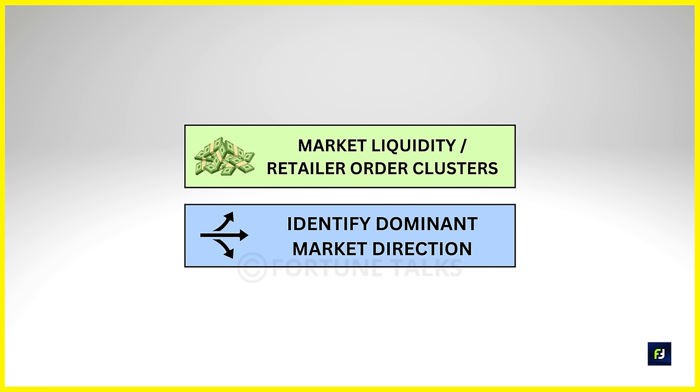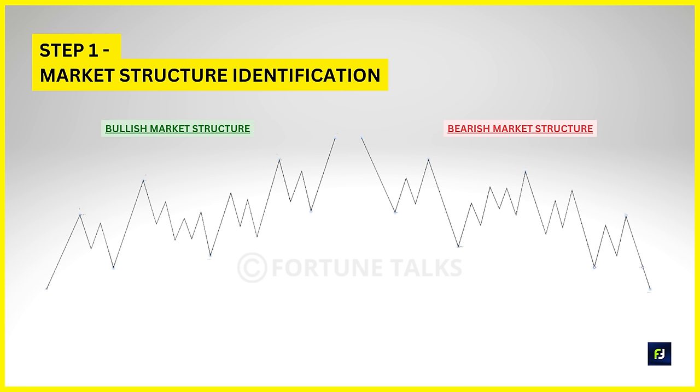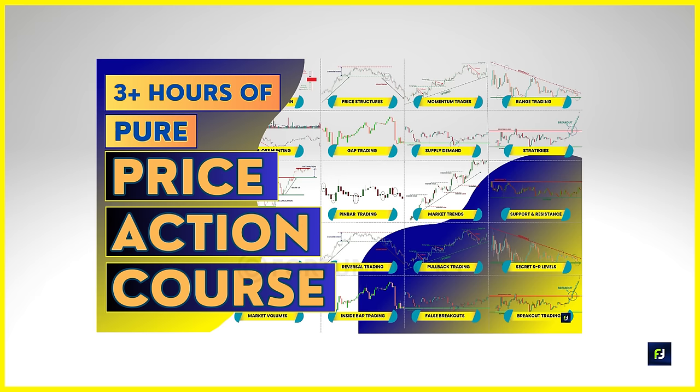In a nutshell, it all comes down to figuring out the market direction and where the major liquidity is. The initial step is to identify the market behavior at a particular time period — or more precisely, we are interested in the identification of a proper market structure so we can plan our trades based on the dominant market direction. In this video, we are going to deal with the idea of market structure with respect to smart money concepts.